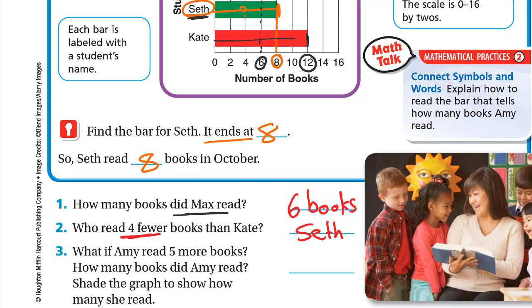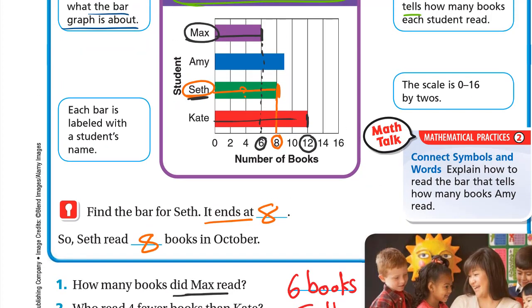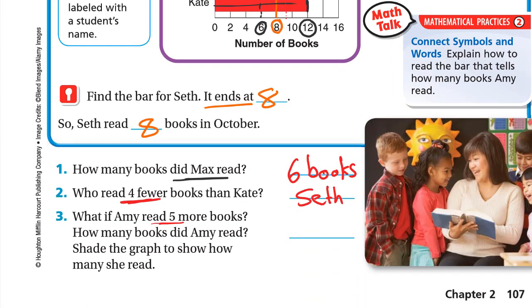What if Amy read 5 more books? Amy's bar currently ends between 8 and 10, which means she read 9. If she read 5 more, that's 9 plus 5 equals 14. We shade the graph up to 14 to show the new bar — this will be the new bar for Amy.